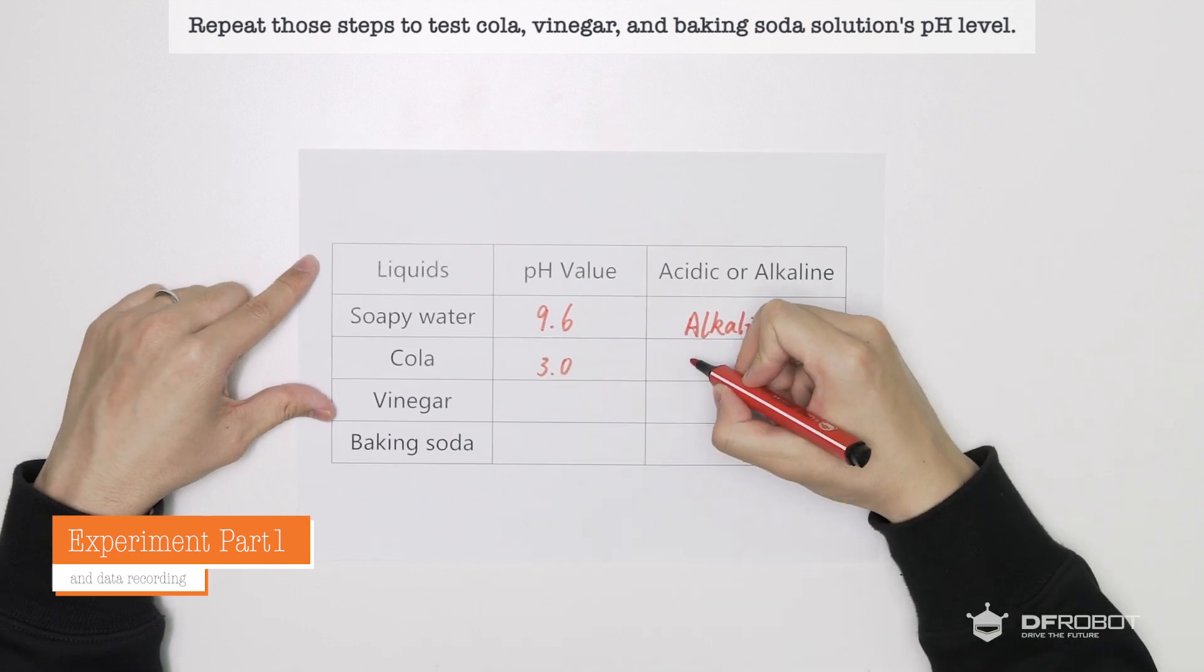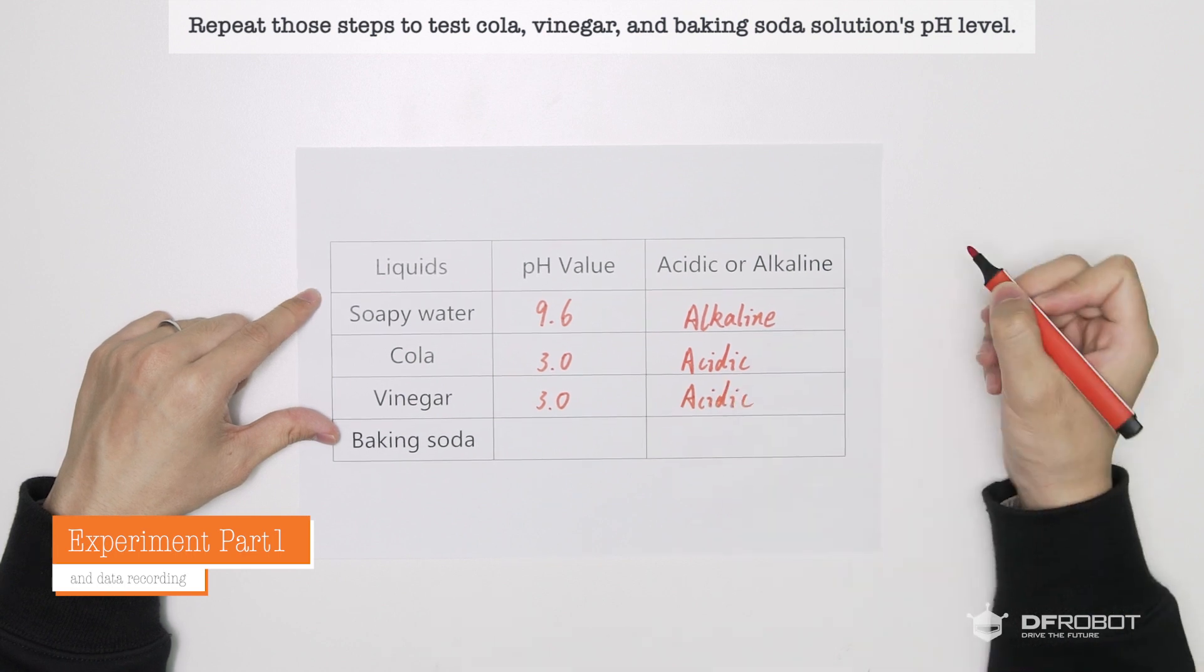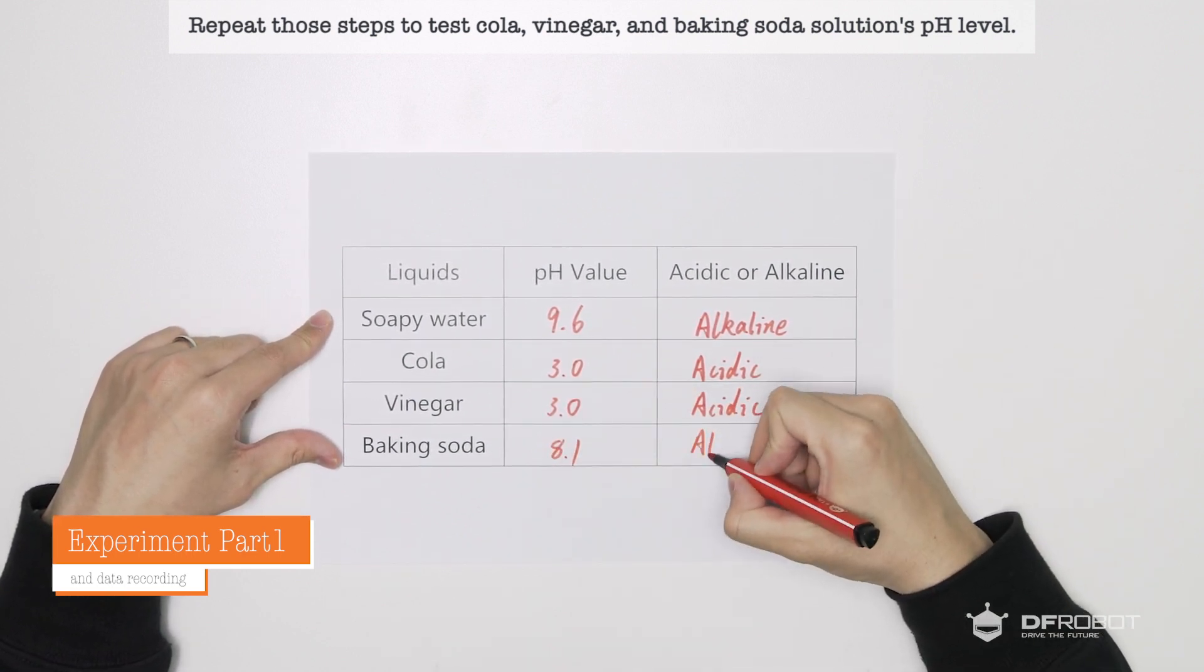The cola's pH is 3.0. It's an acidic substance. The vinegar's pH is 3.0. It's an acidic substance. Baking soda solution's pH value is 8.1. It's an alkaline substance.